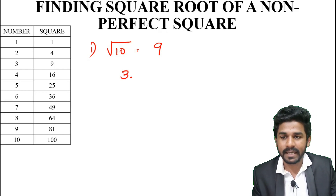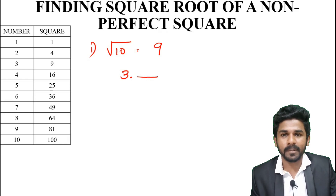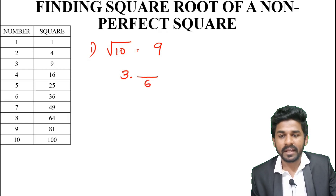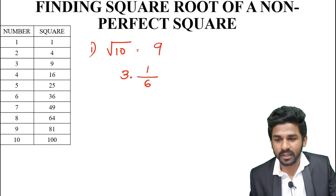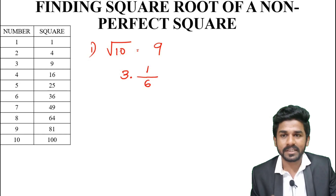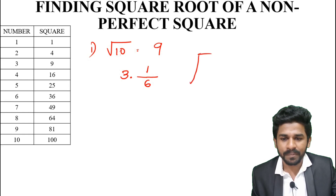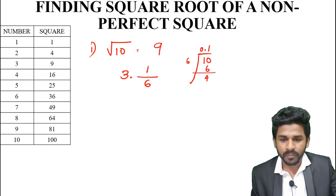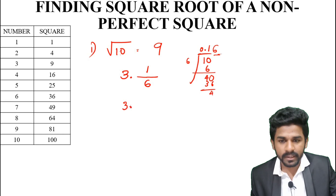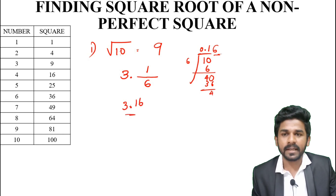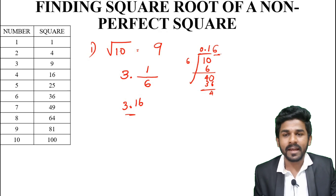For √10: the nearest perfect square below 10 is 9, so √9 = 3. Double 3 to get 6. Then 10 minus 9 equals 1. So we get 1 divided by 6 ≈ 0.16. Therefore, √10 ≈ 3.16. The answer is approximately very near to the actual value.